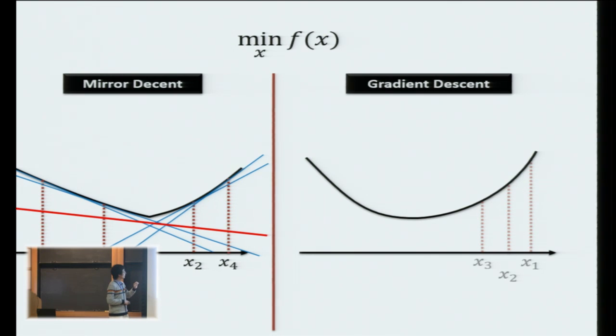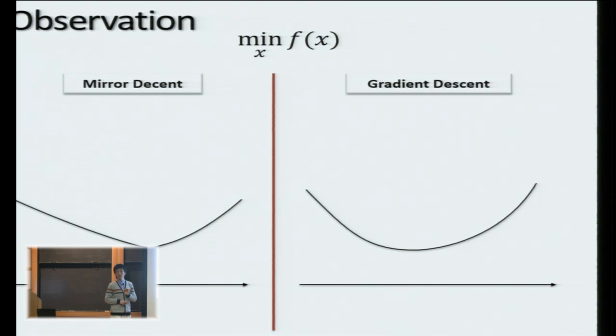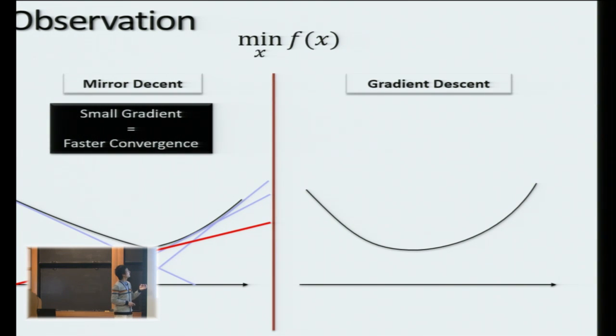So let's now make two very quick observations just from the pictures. In mirror descent, if the gradients we have received are kind of flat already, meaning the gradients being small in whatever norm, say Euclidean norm, then it's very easy to converge. It's very easy to get a final hyperplane that is very flat. And if the gradients are, in contrast, very steep, then it becomes much harder to converge. I summarize this as mirror descent satisfies that if we have small gradients, then that gives faster convergence.